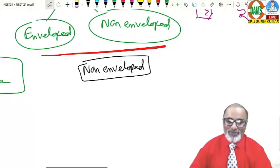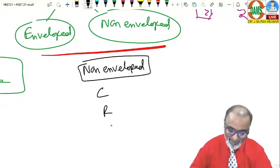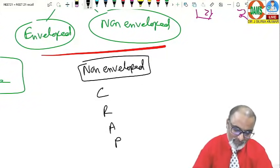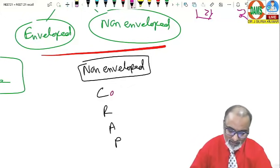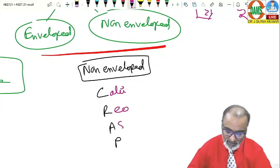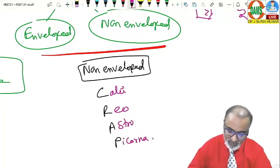You know the mnemonic. What is the mnemonic? CRAP. C for caliciviridae, reoviridae, astro and picorna. Here, be careful.